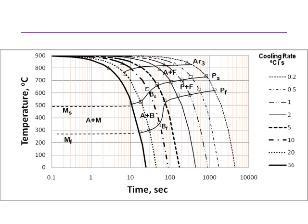So they look this way. We start with a certain temperature — in this example, the starting temperature is 900°C — and then we select a certain cooling rate, like this one, which is relatively small at 0.2°C per second. If we follow the cooling curve, we can see that the path is given by this line.